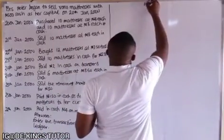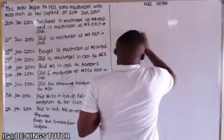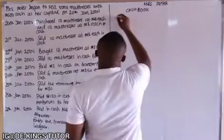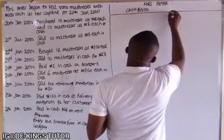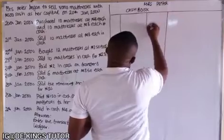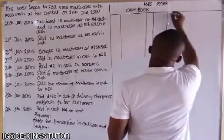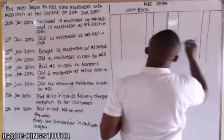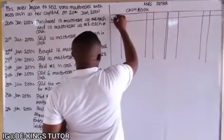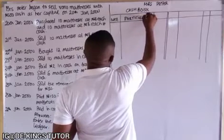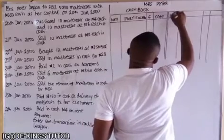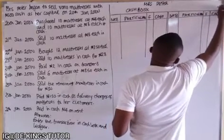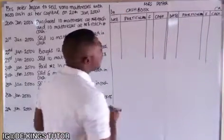The owner of the business is Mrs. Peter. So we open the cash book. It will have: date, particulars, folio, and cash on the debit side, and date, particulars, folio, and cash on the credit side. The credit side is on the right and the debit side is on the left.